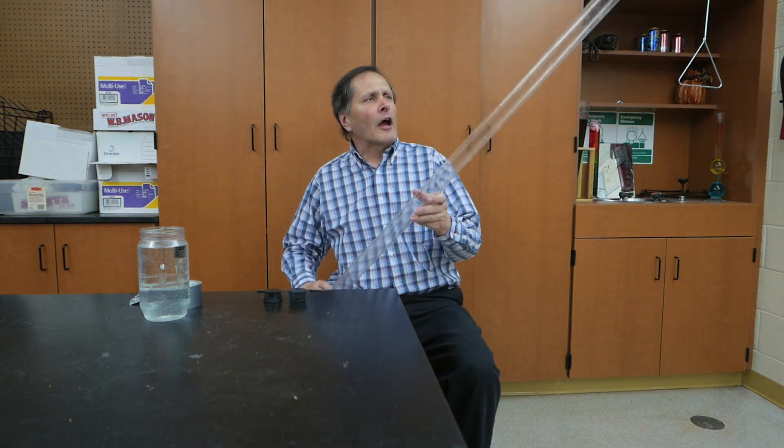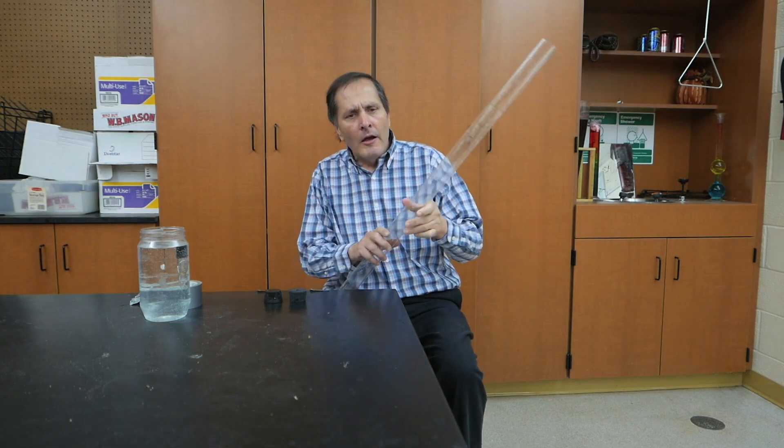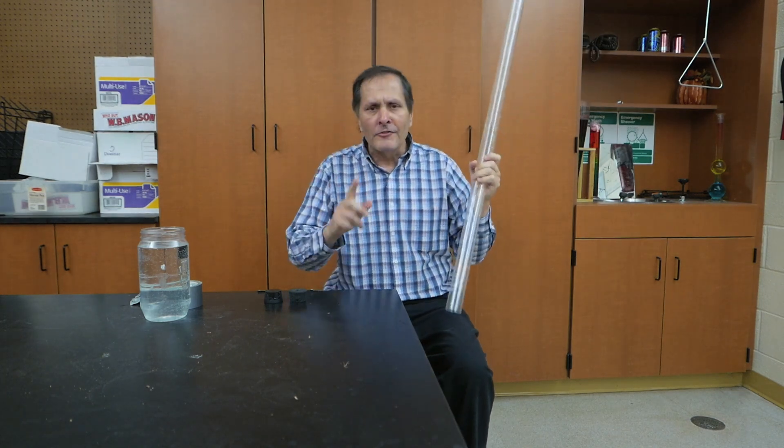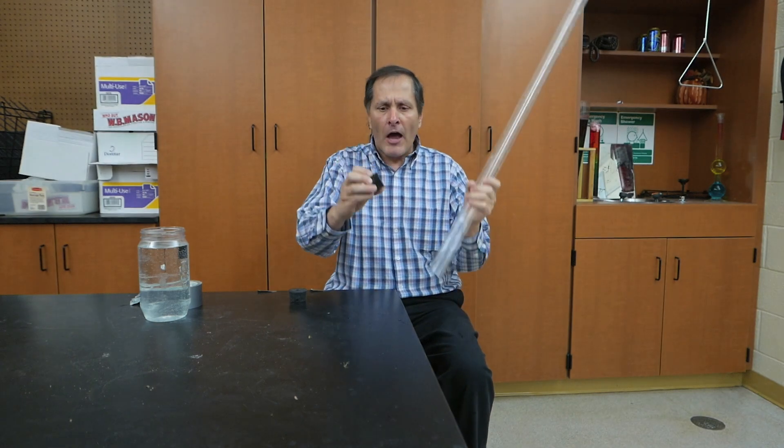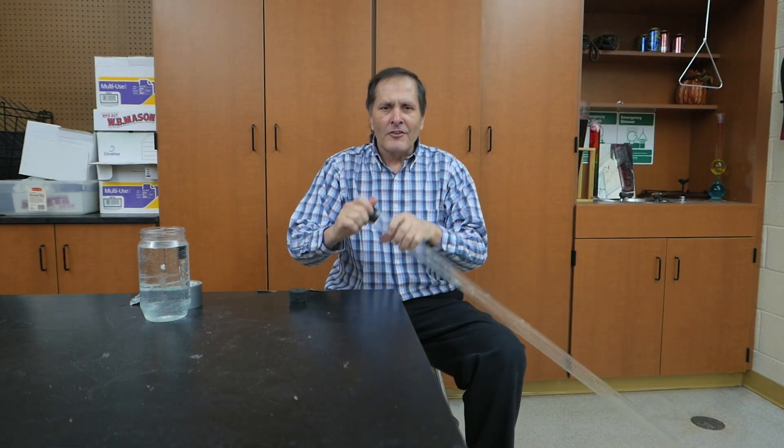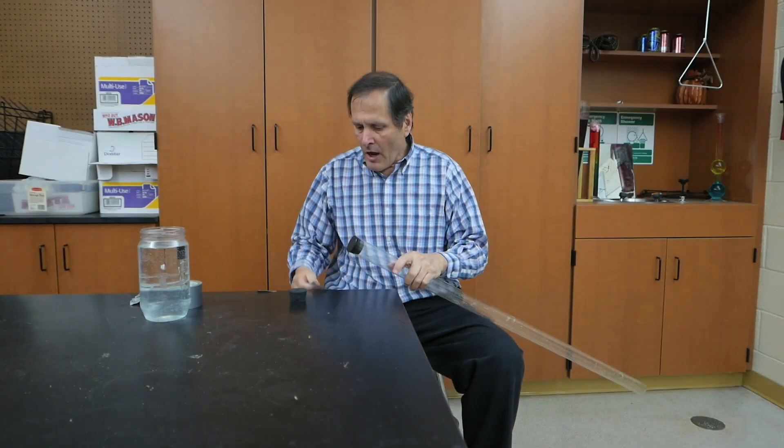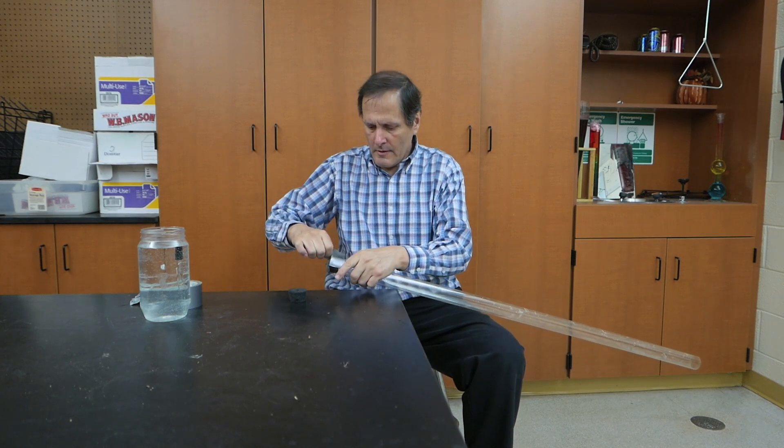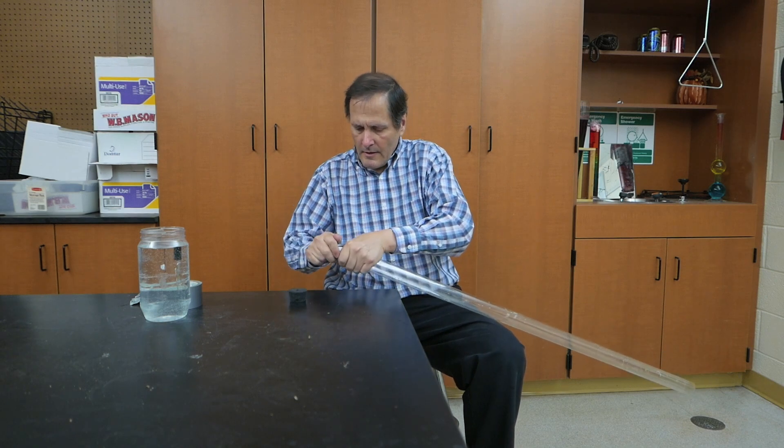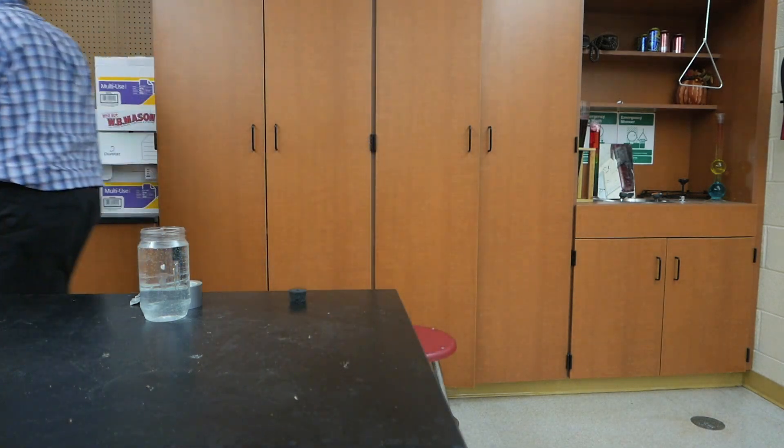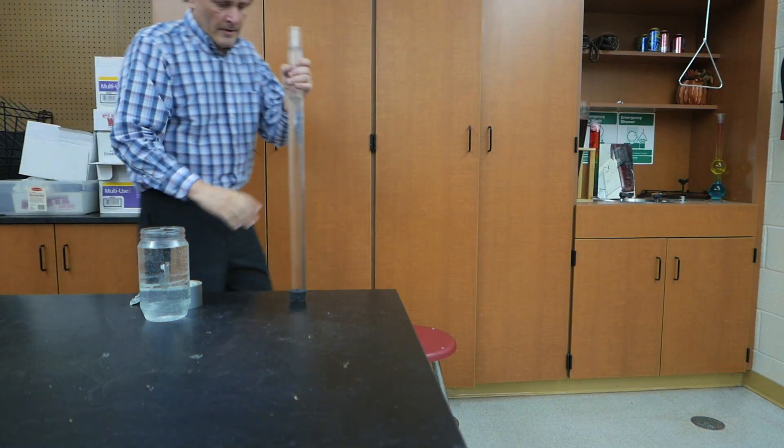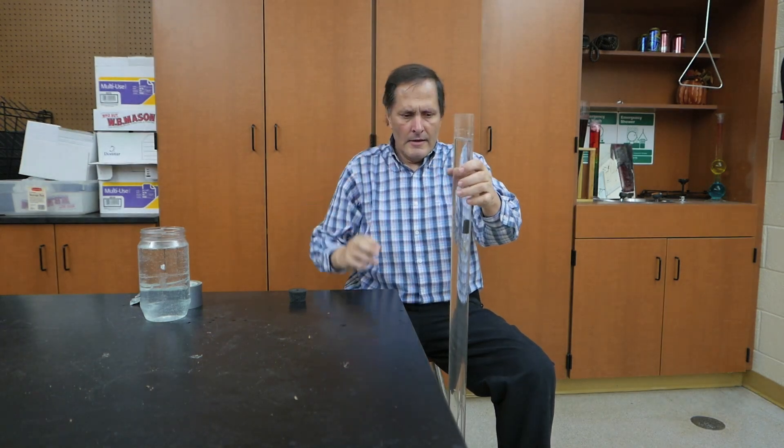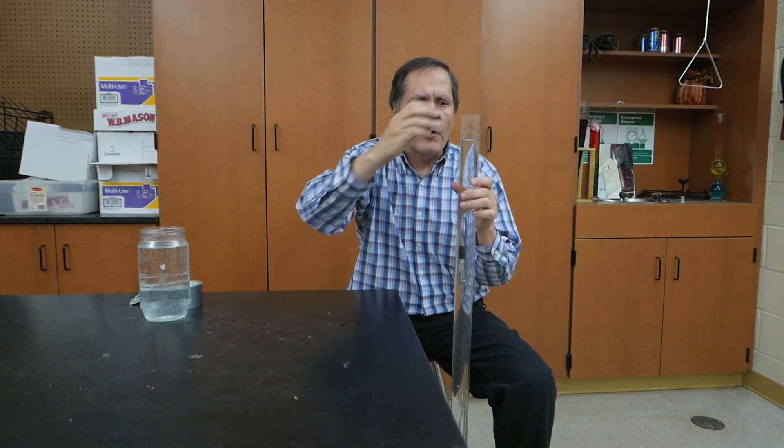Now I think one of my favorite containers to make Cartesian Divers in is this four foot long plastic tube that's used to protect fluorescent lights. It's actually flexible, and it's open at both ends, so I'm going to need two number nine stoppers. The one stopper is solid, and I'm going to put that at the bottom. Now just to make sure that it doesn't pop off when I'm squeezing this, I'm going to use some duct tape just to hold it a little bit more securely. Now I'll go put some water in this. Our next step is to add the diver. And the other stopper, which I said has a hole in it, goes on the top.